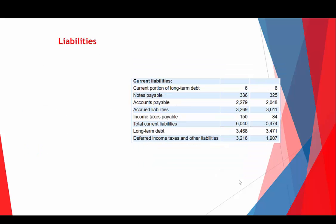Next we have liabilities. Again, you see we have current liabilities on Nike's balance sheet — current portion of long-term debt, notes payable (where they sign an agreement to borrow a set amount), and accounts payable, which is what Nike owes their suppliers for materials they've purchased but haven't paid yet. A liability is defined as any future obligation of economic resources based on past events.